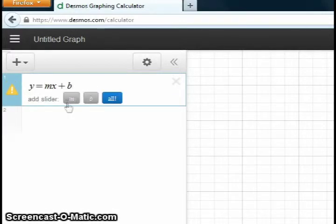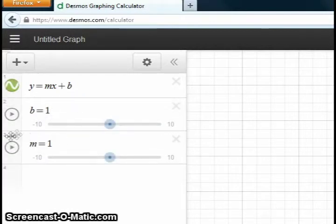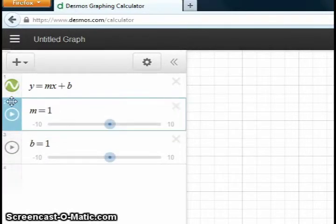You can type in the equation, and Desmos will recognize that there are too many variables to graph the line. It will ask if you want to add sliders for some of the constants, and you can select which ones you wish to use. When you add a slider, the corresponding variable will appear below the main expression, and you can move the slider to change its value.